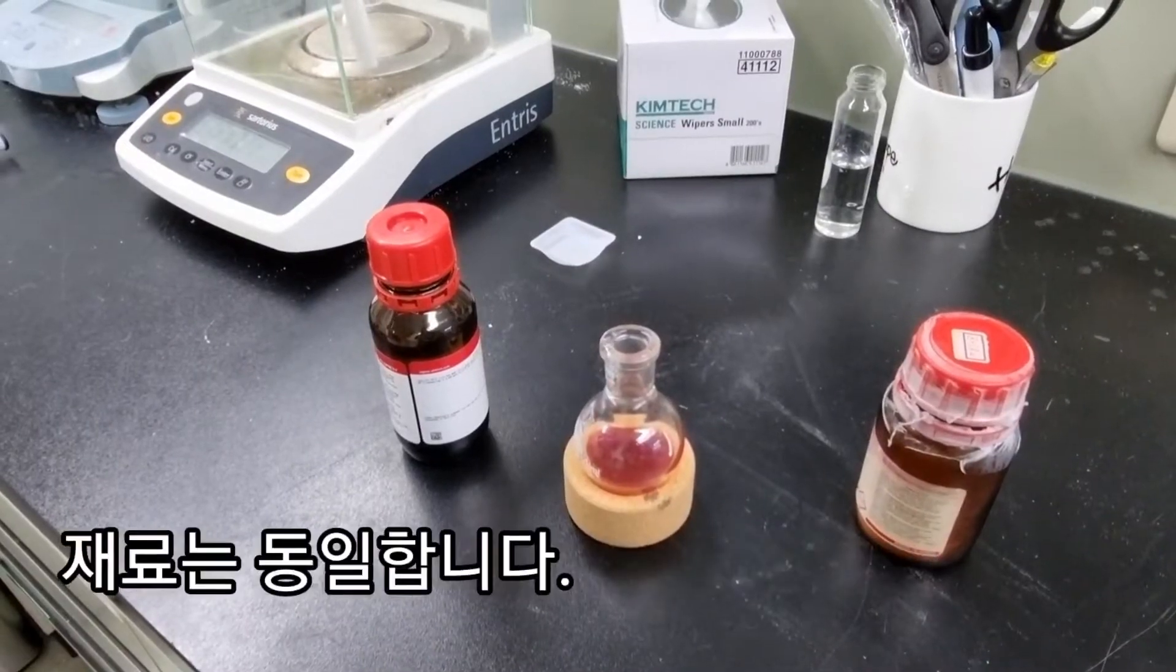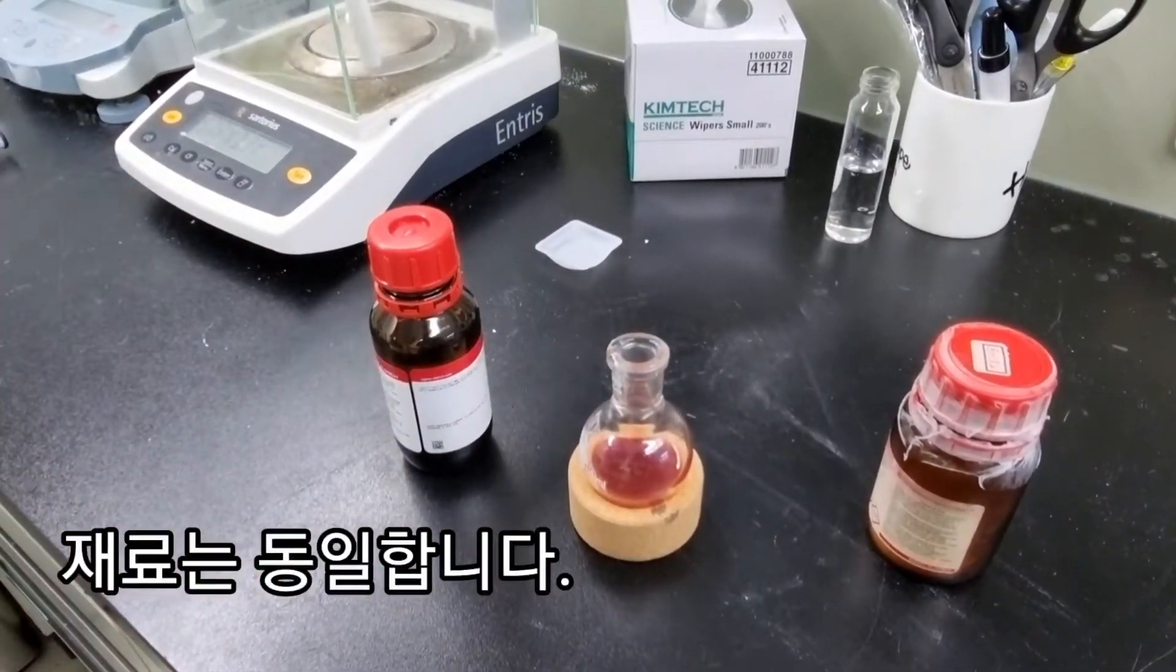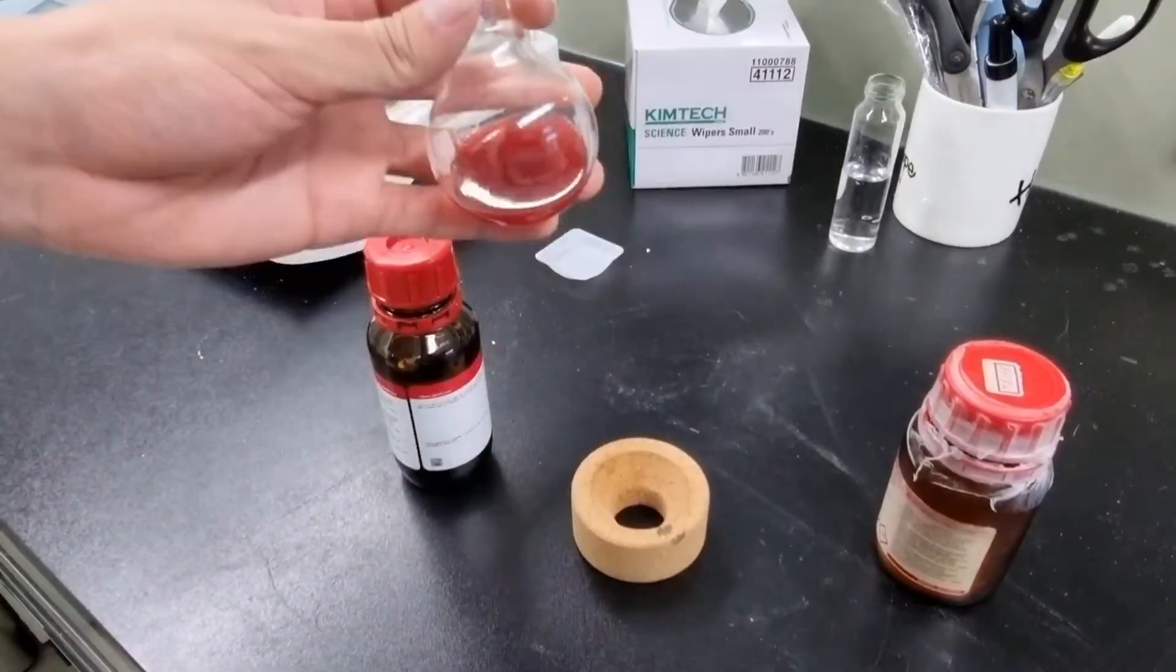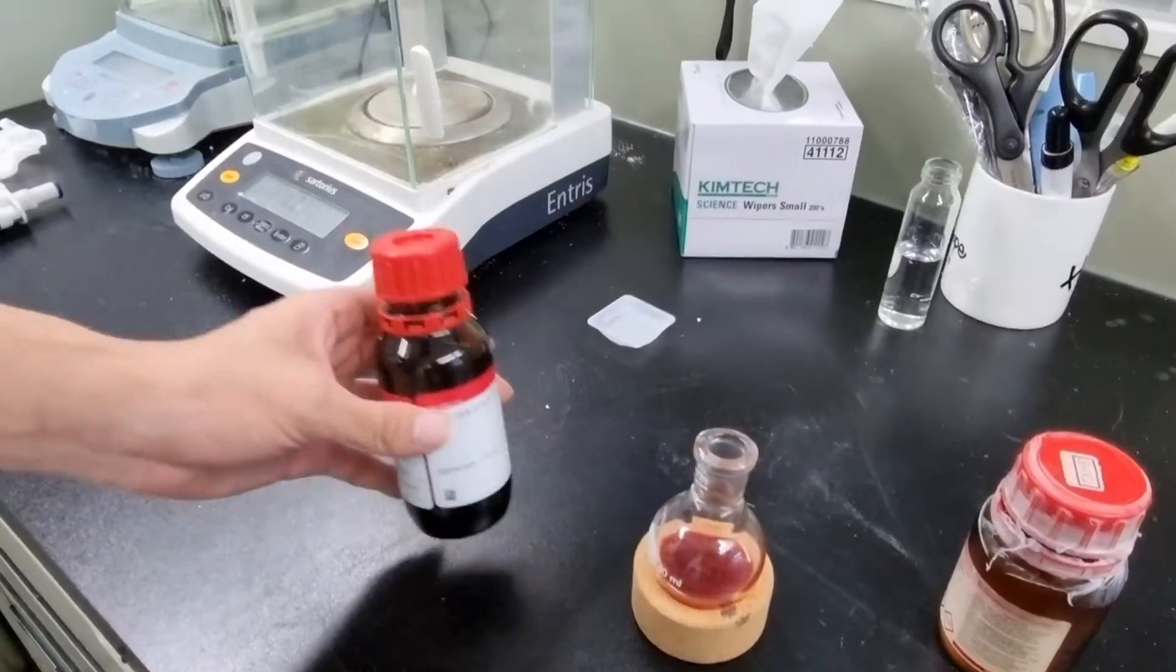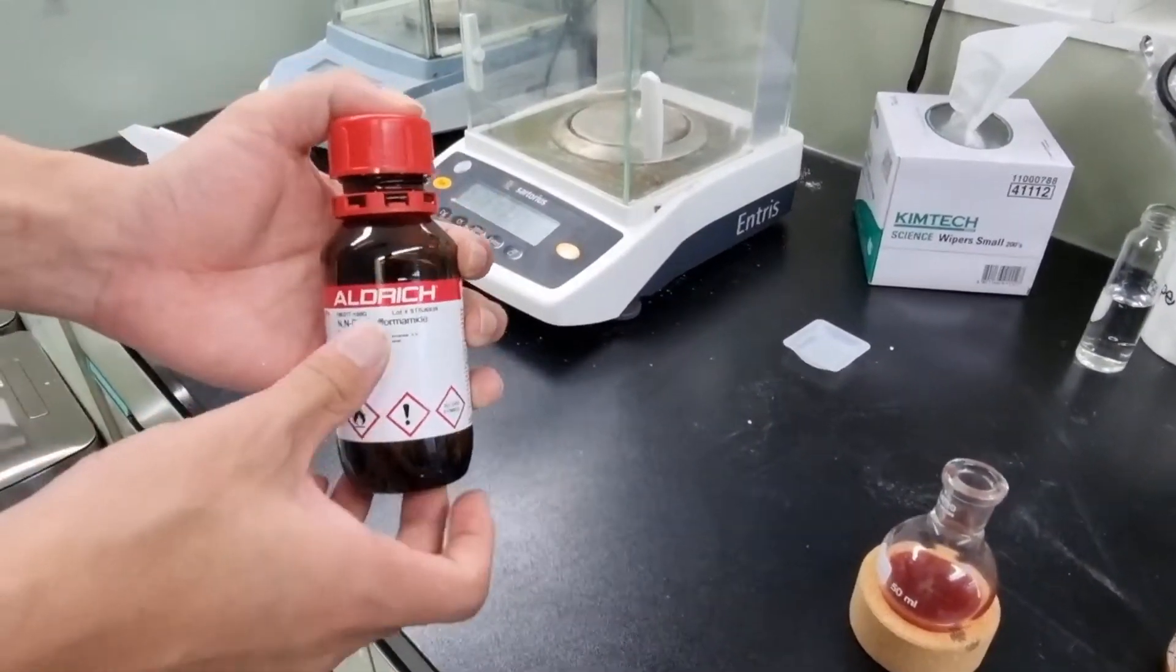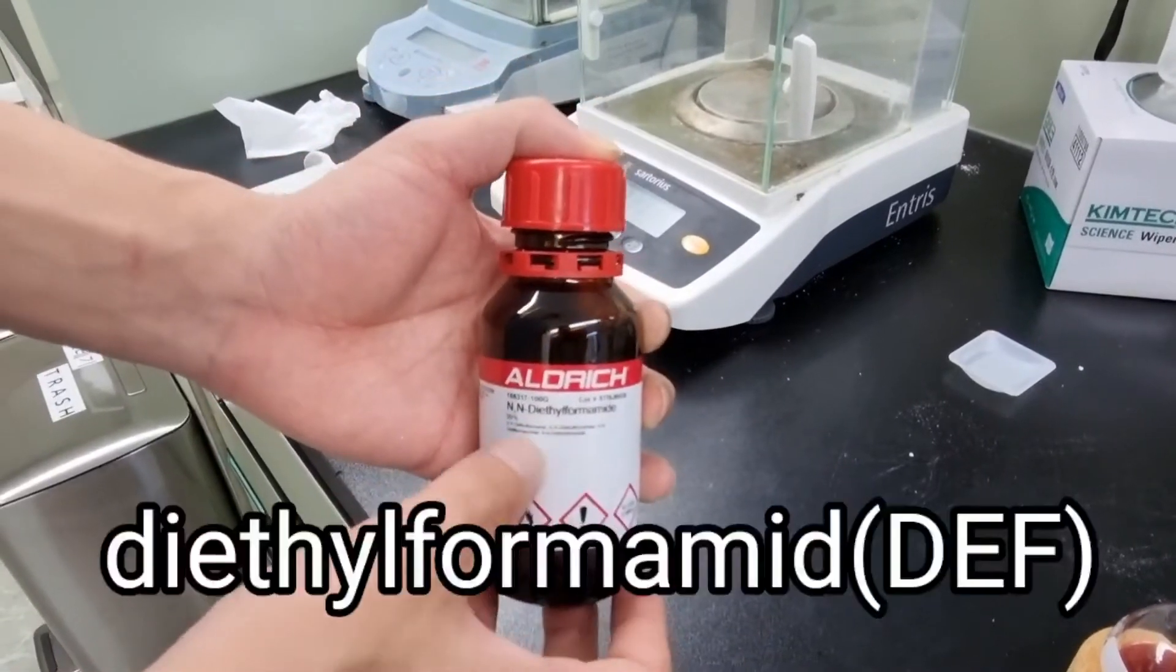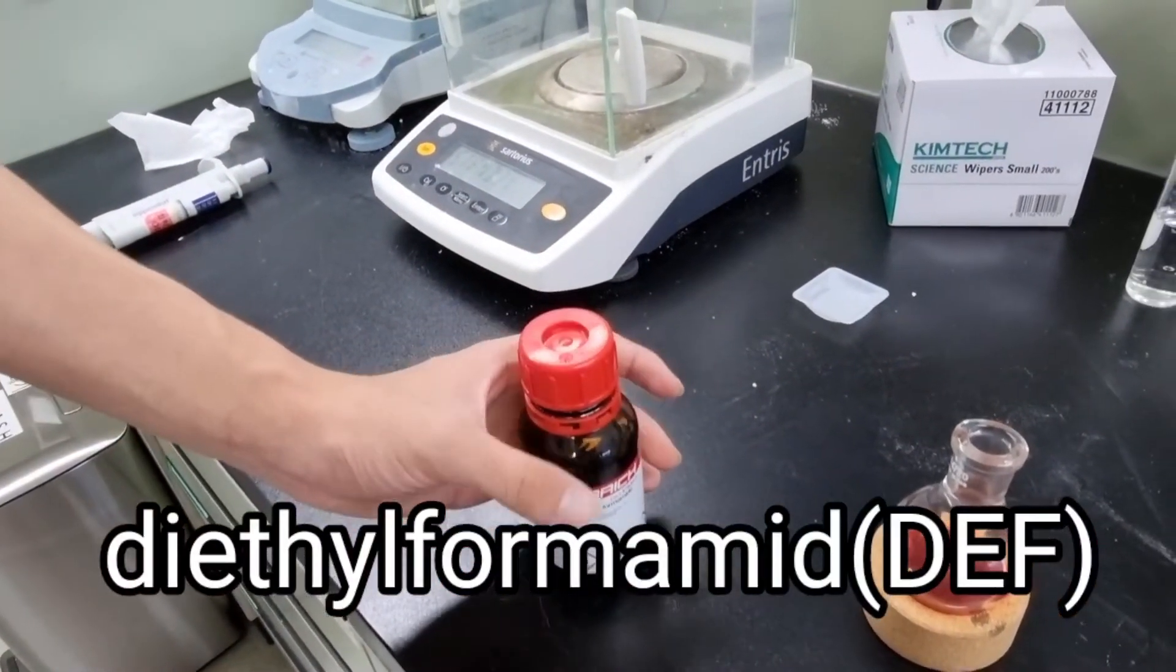So the ingredients are the same as before. You need a metal salt, in which I'll use zirconium chloride in this case, and this is the ligand solution. And this will be the solvent you will use. We usually use DMF, but in this case I use diethylformamide, which is called DEF.